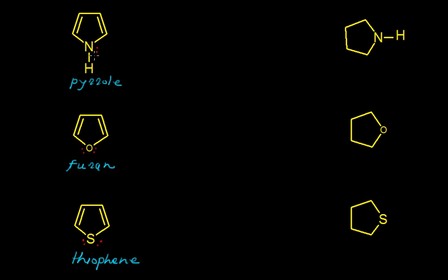Let us take the first example of pyrrole. In pyrrole we have four carbon atoms with one nitrogen as a heterocycle, and on this nitrogen we have one lone pair of electrons. All four carbon atoms are sp2 hybridized.